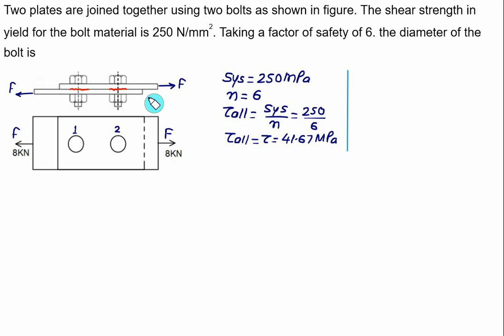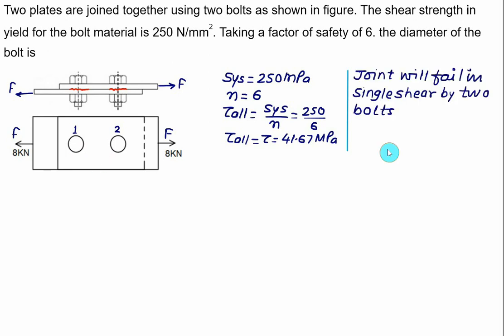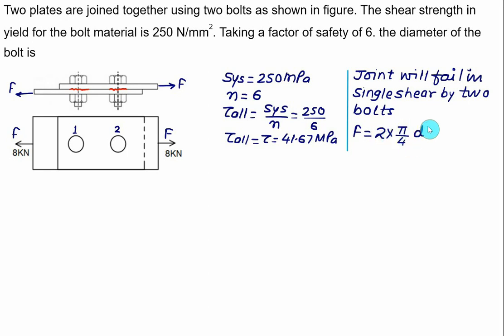Since only two plates are used, this is a lap joint, so failure is by single shear. We have two bolts, so the external force F must equal the number of bolts (2) multiplied by the shear area (pi/4 × D²) multiplied by the allowable shear stress.